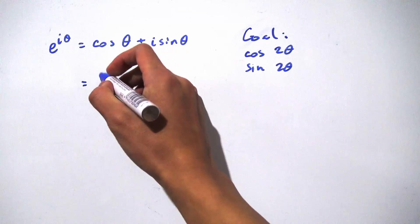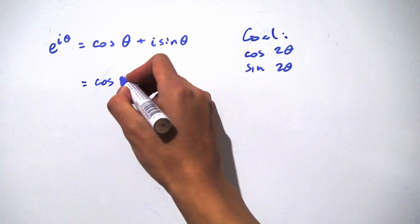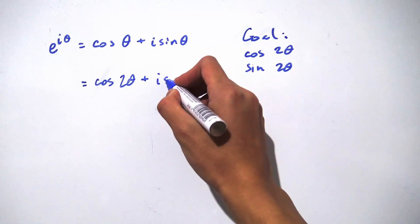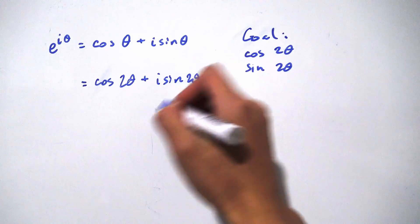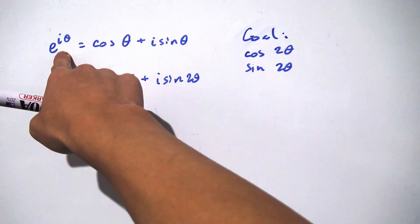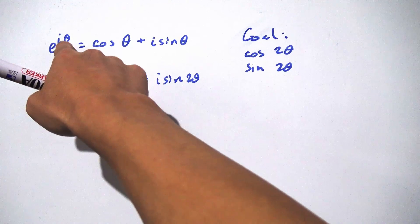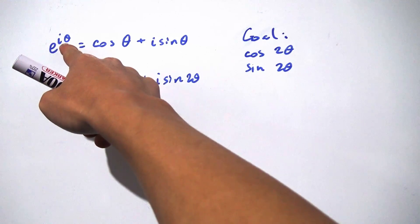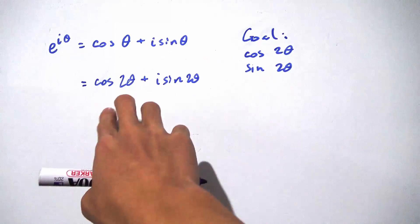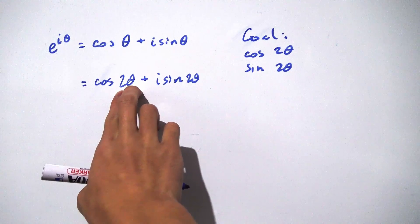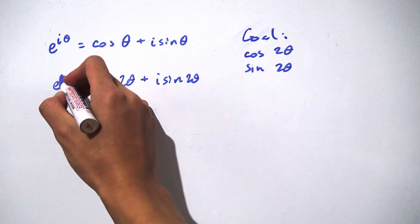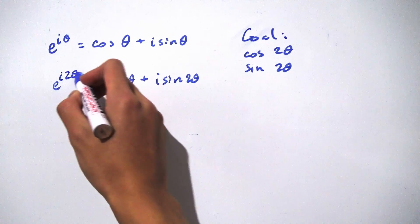So we have something being equal to cosine of 2θ plus i times sine of 2θ. What is this something? Well, looking at Euler's formula, we have e to the i times this angle, and this angle appears in the argument of the cosine and the sine. Here the argument is 2θ, so that means we have e to the i·2θ.